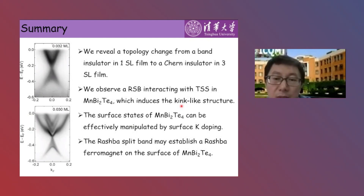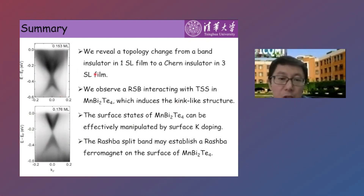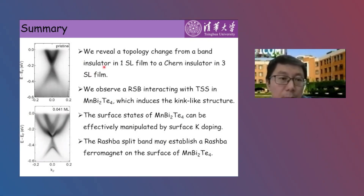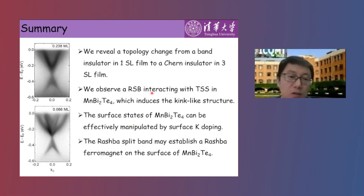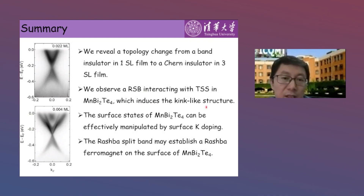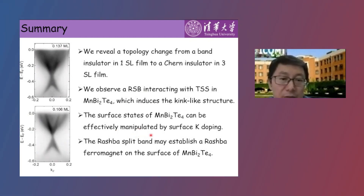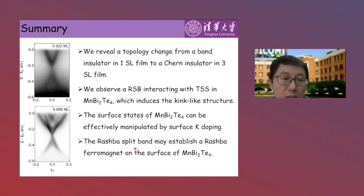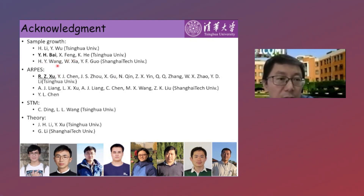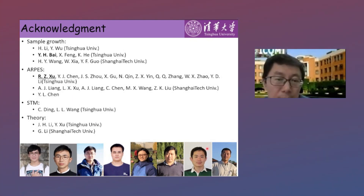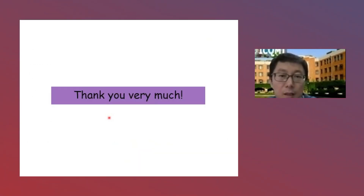To summarize: we reveal a topological phase change from a trivial band insulator in 1-SL film to a Chern insulator in 3-SL film. We observe a Rashba-split band interacting with the topological surface state in manganese bismuth telluride, inducing the kink-like structure. The surface states can be effectively manipulated by surface potassium doping, and the Rashba-split band may establish a Rashba ferromagnet on the surface. I would like to thank my collaborators: films grown by Professor Ke-He's group, bulk samples by Professor Wang and Professor Guo, ARPES measurements conducted at Tsinghua University with help from Professor Yu-Lin Chen and Zhong Kai-Liu's group, and calculations by Professor Xu Yun.